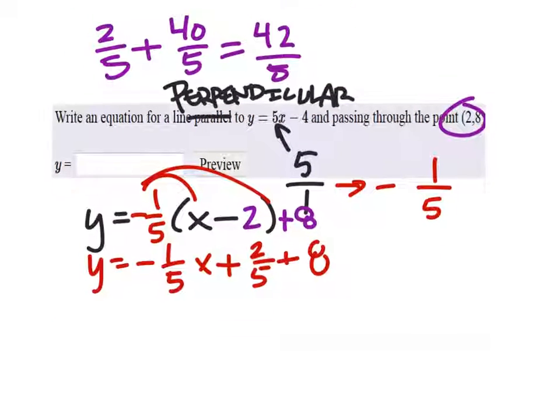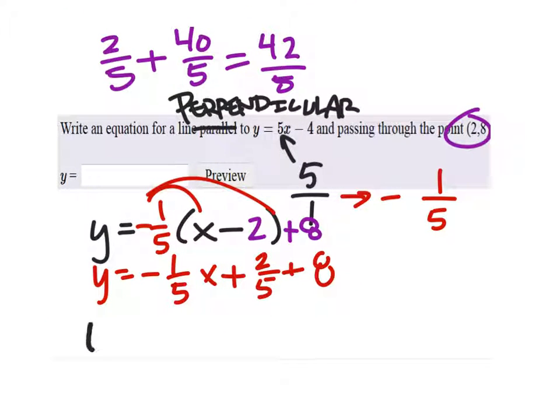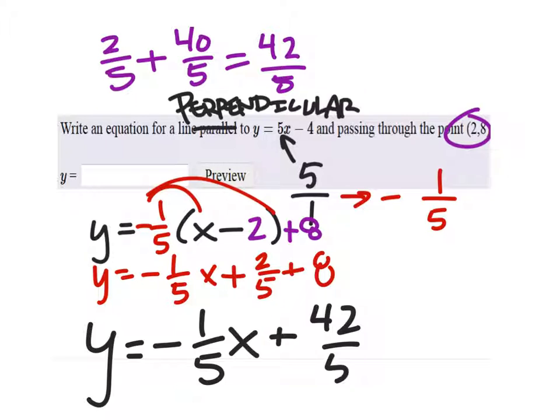And I give myself a little bit more space. I'm going to get y equals negative 1 fifth x plus 42 fifths.